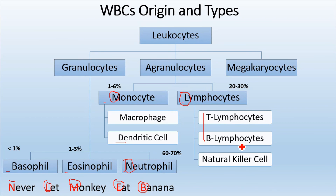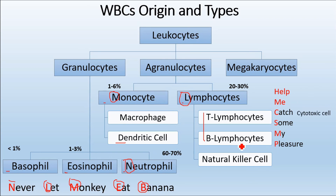The mnemonic is: imagine T lymphocyte saying to B lymphocyte, 'Help me catch some pathogen,' and B lymphocyte replies, 'My pleasure.' For T lymphocytes: H is for helper cell, M is for memory cell, C is for cytotoxic cell, S is for suppressor cell. For B lymphocytes: M is for memory cell and P is for plasma cell. Using this line, we can easily memorize all the subtypes included within lymphocytes.